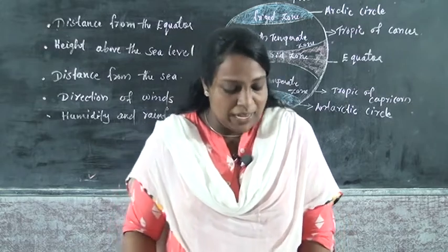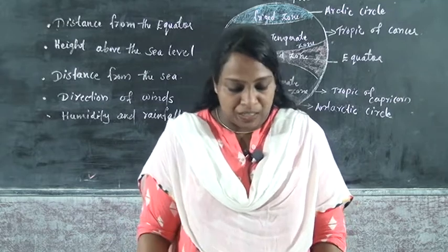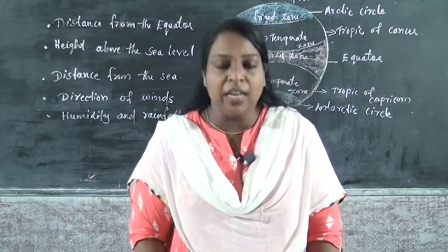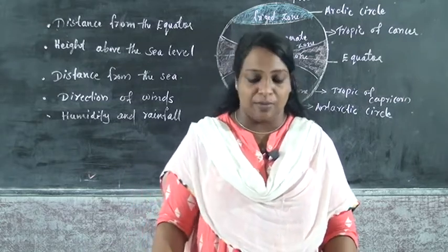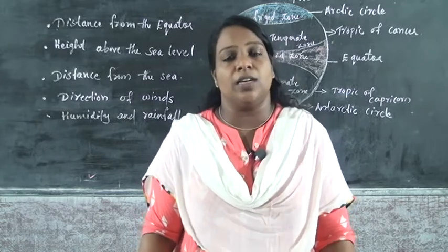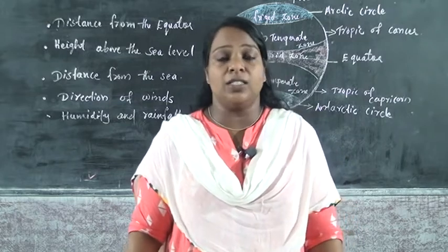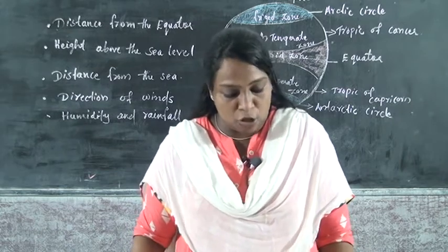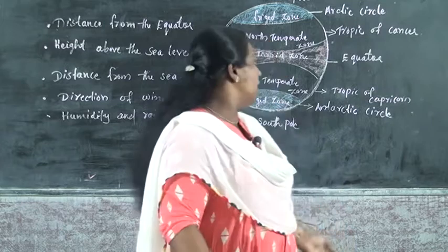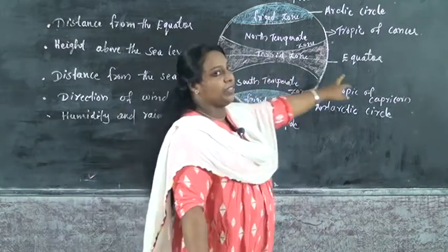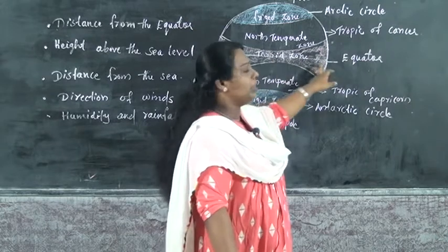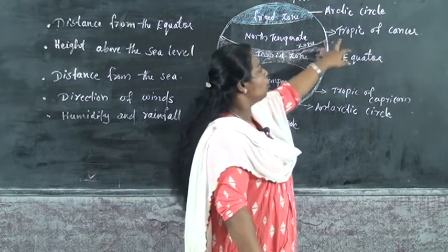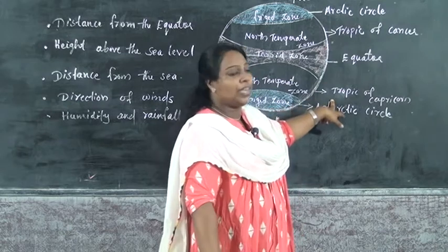After that, we can divide the earth into three heat zones. The first one is the torrid zone, the second is the temperate zone, and the third is the frigid zone. The torrid zone — the other word is tropical zone — is near the equator. We can see here the torrid zone lying in between the tropic of Cancer and tropic of Capricorn.